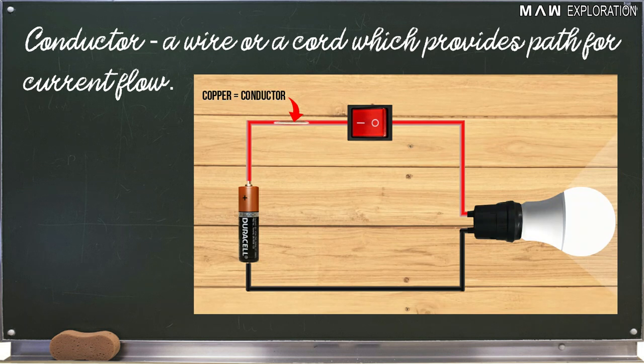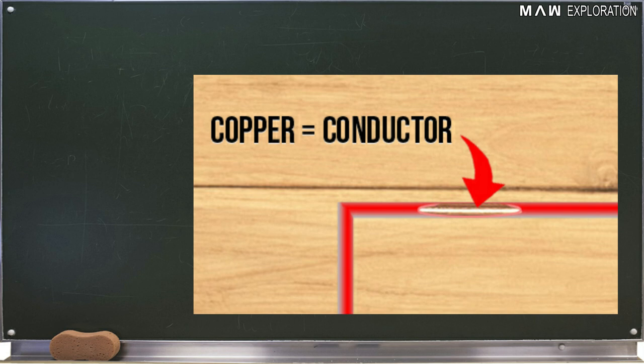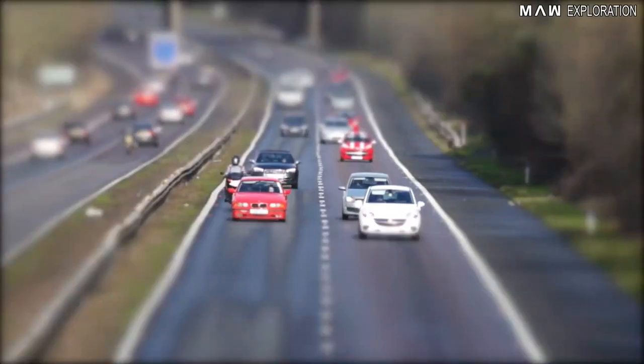Number four, conductor. Conductor is a wire or a cord that provides a path for current flow. The copper or metal part inside the cord is the conductor. It is like a superhighway for electrons.